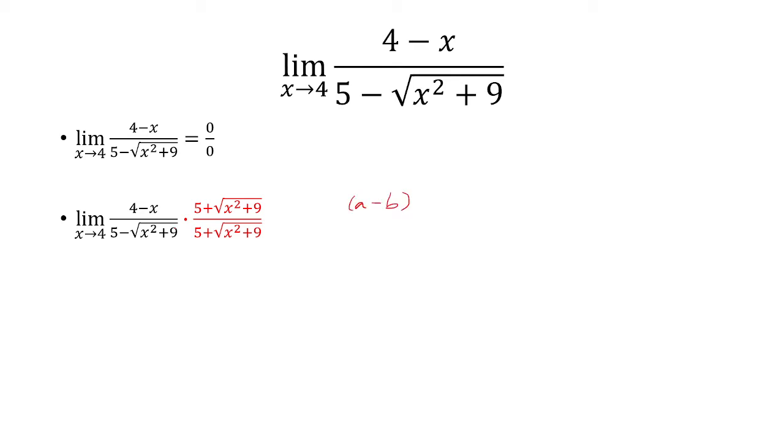Right now you have a minus b, a being 5, b being the square root of x squared plus 9. And we're multiplying it by the conjugate, or a plus b, to get a squared minus b squared.